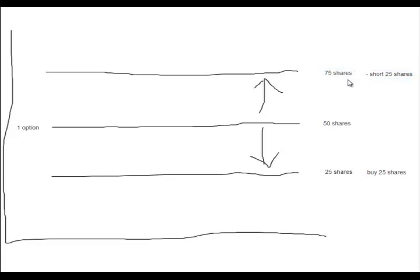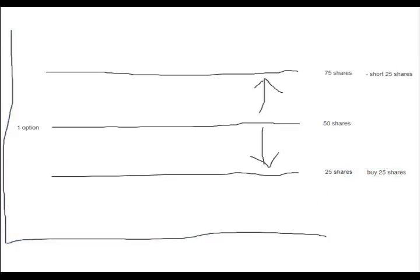If the price of the underlying moved back to the original price, the trader would then be short 25 shares, and to become Delta neutral they would have to purchase 25 shares. Conversely, if an at-the-money call that was Delta neutral moved down by 10%, a trader would have to buy 25 shares to make it Delta neutral. And if it then returned to the original price, the trader would need to sell the 25 shares to make the portfolio Delta neutral.